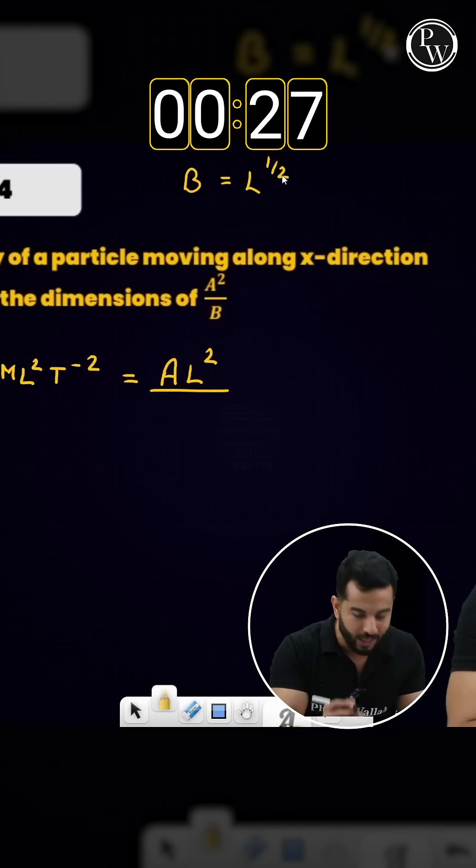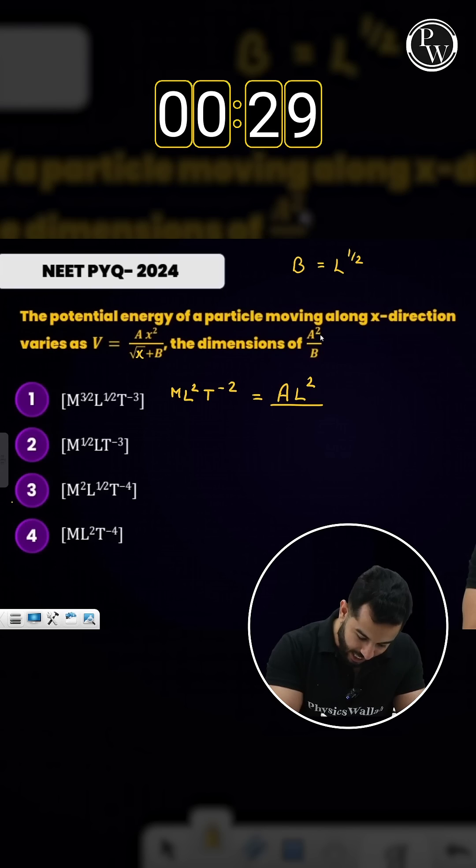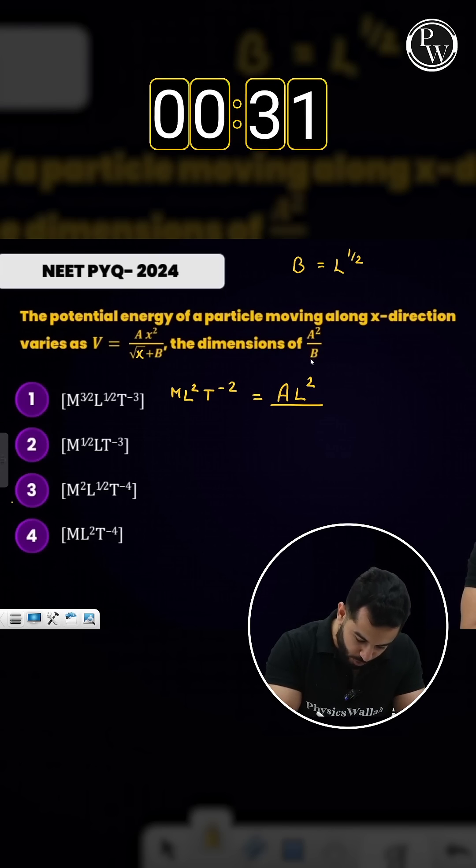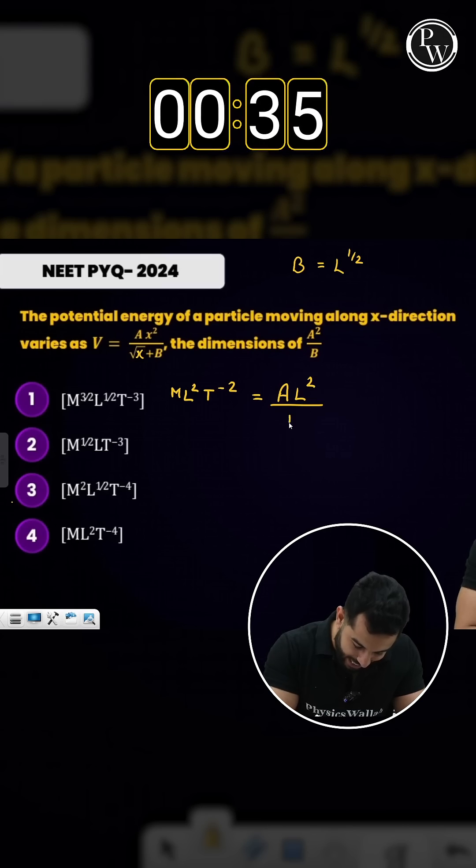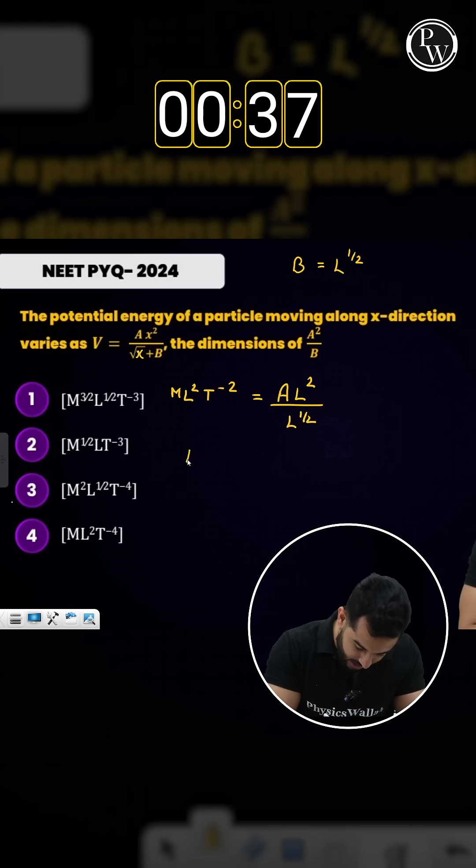So that means b will have the dimensions of L^(1/2) because you can only add similar quantities. The dimensional formula of a square. So first, let's quickly find out what a is. So divided by L^(1/2), and that's how you're going to get the dimensional formula of a.